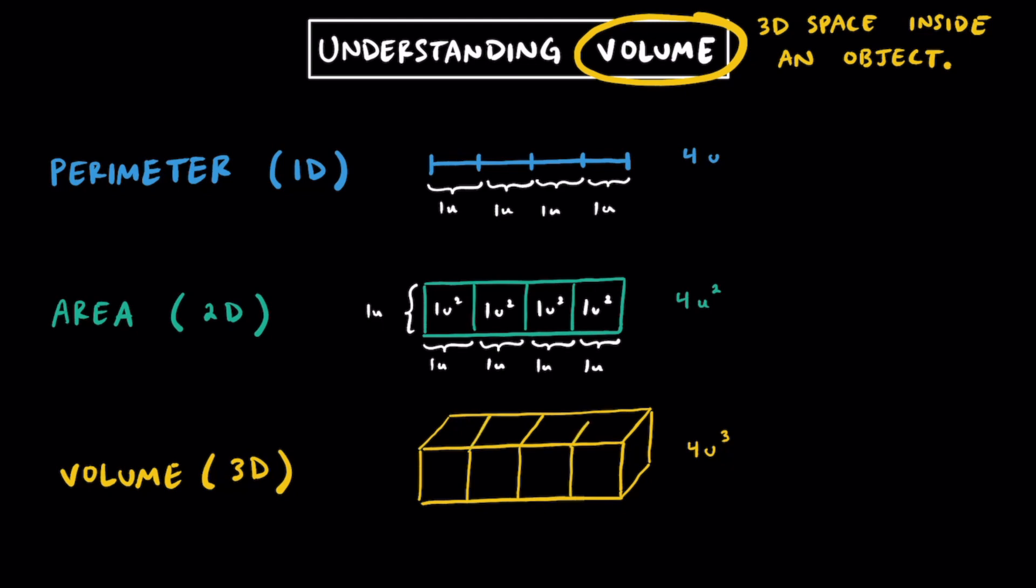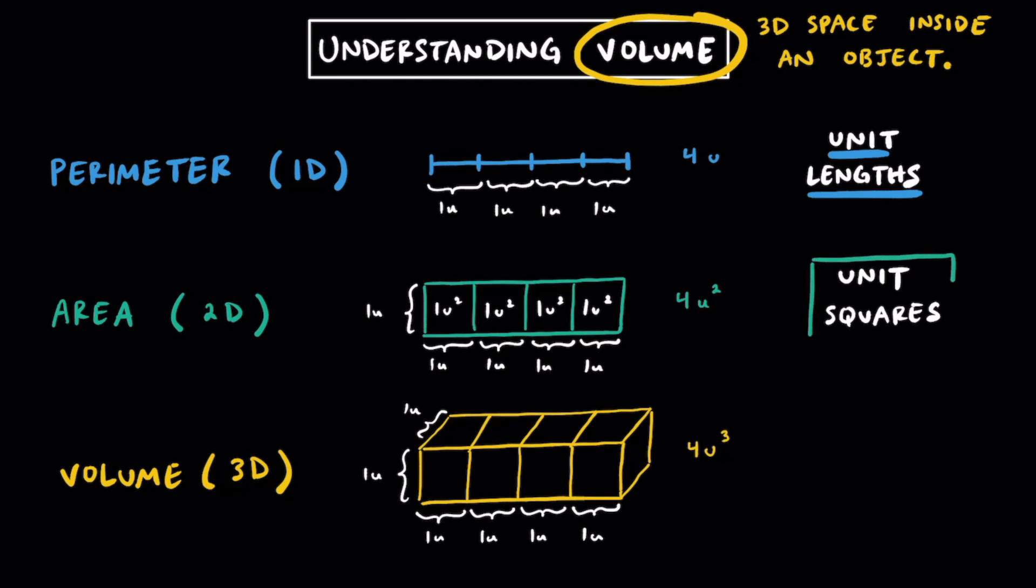Splitting this rectangular prism into four identical cubes that have a length of one unit, a width of one unit, and a height of one unit, we have four cubic units, or four cubes, that make up this rectangular prism. Some key takeaways are that perimeter is the measurement of unit lengths, area is the measure of unit squares, and volume is the measurement of unit cubes, or how many unit cubes make up a 3D shape.